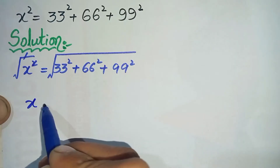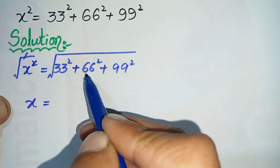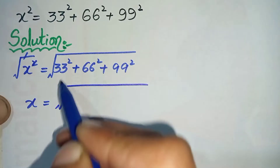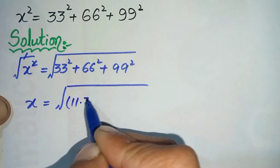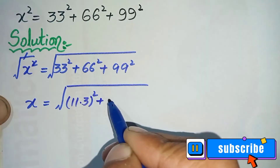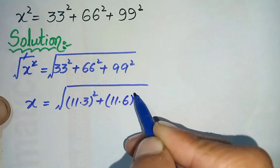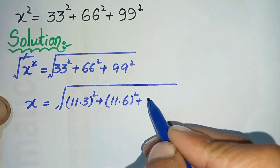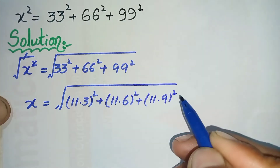On the left hand side, the square and the square root will cancel with each other, so only x will be left. On the right hand side, 33 can also be written as 11 times 3, whole squared, plus 66 as 11 times 6, whole squared, plus 99 as 11 times 9, whole squared.